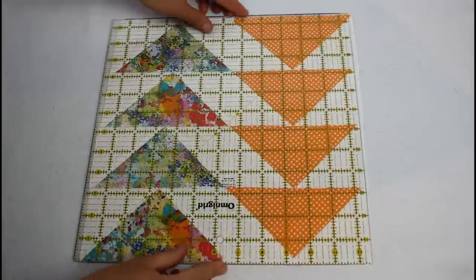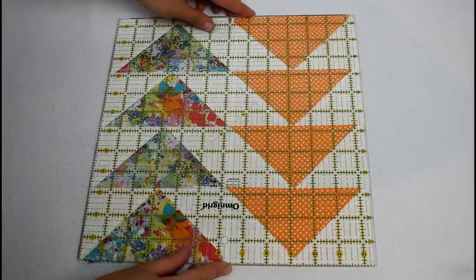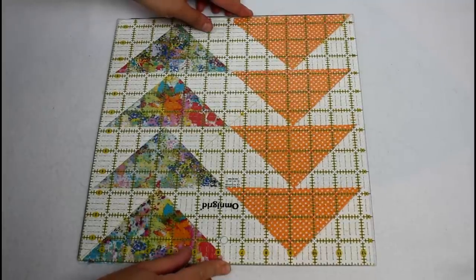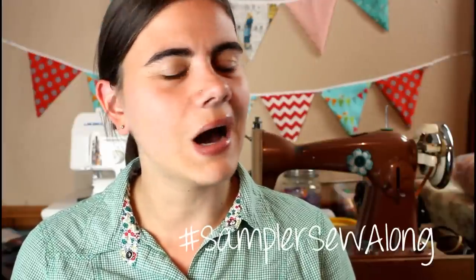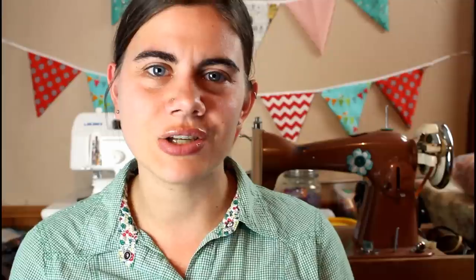It should measure 12 and a half by 12 and a half inches right now and will be 12 inches when sewn into the finished quilt. Take a picture of your block and share it using hashtag SamplerSewAlong so that we can all see the awesome block that you have made and then go ahead and pick out your fabrics for the next block which is shown here on the screen in gray.